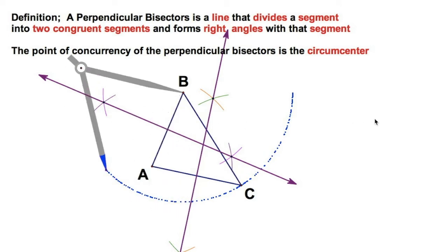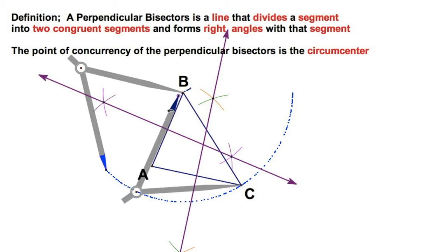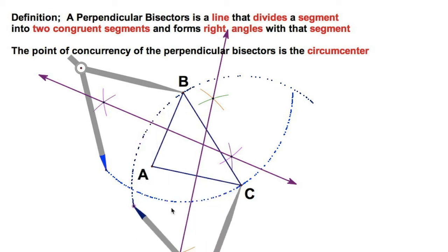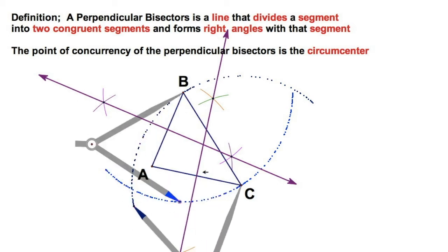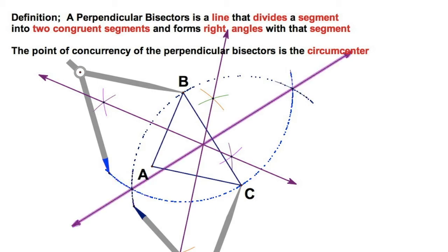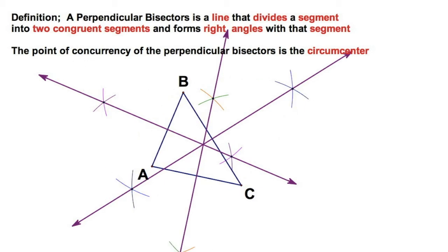I'm going to put the needle on B, swing it through C, then put the needle on C and swing it through B. That was a mistake — I didn't swing that one far enough. Line up your straight edge on those two intersections and there you go, that's the third perpendicular bisector. That point right there is the point of concurrency — that's where all three perpendicular bisectors meet. That's a magic point.